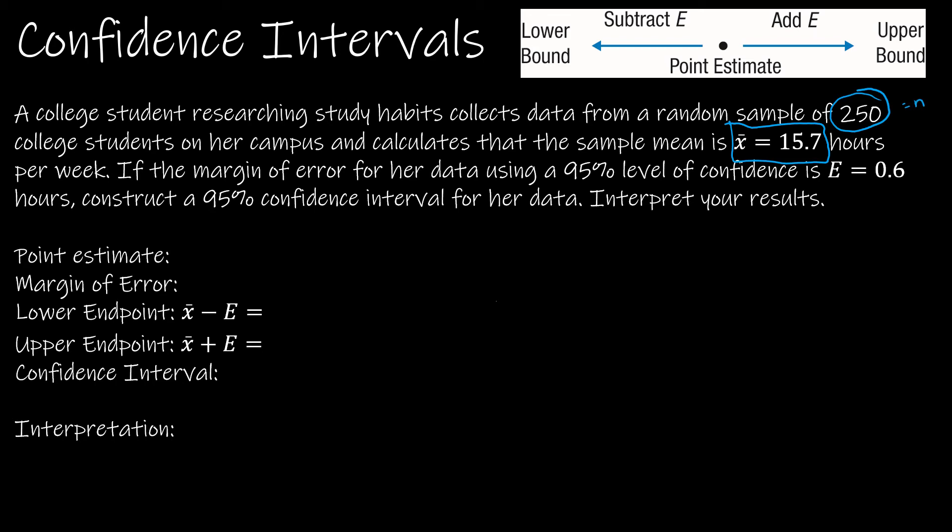If the margin of error for her data using a 95% confidence level, so this typically would be something that's important later. For now, we're just going to point out that it's 95%. The margin of error is 0.6. So this is important now, because this is something that we're going to calculate on our own later. But this is given to us now just so we can get the basic idea. So we're trying to construct a 95% confidence interval, and then talk about what it means.